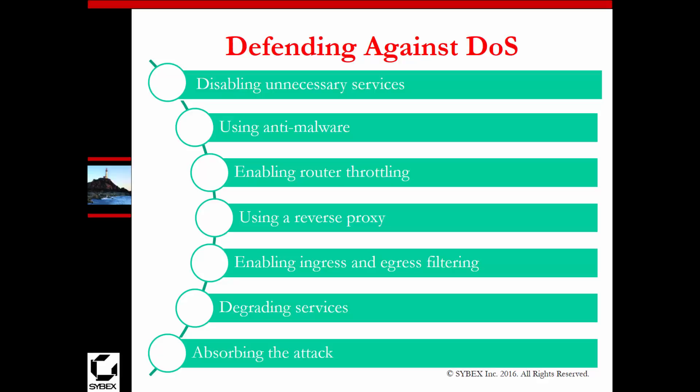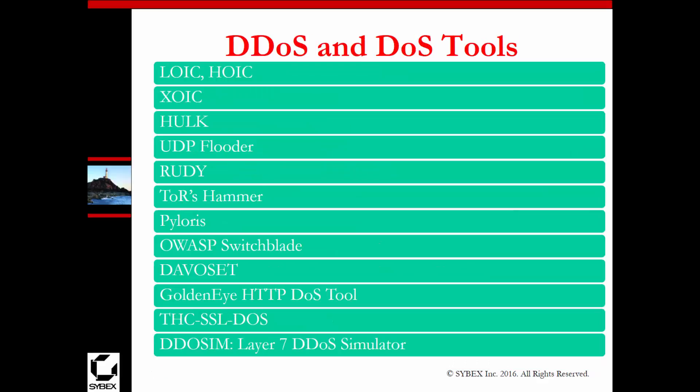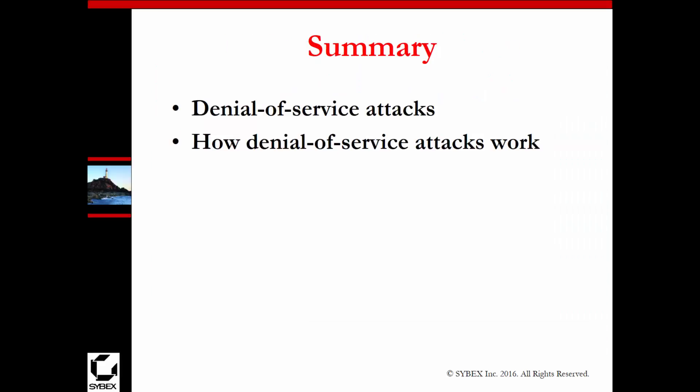By monitoring your network, you can start seeing what is normal and identify when something is abnormal and look into it. There are several types of DDoS tools that generate DDoS type attacks. In this chapter, we focused on DDoS — how they work and their basic functionality. Thank you.